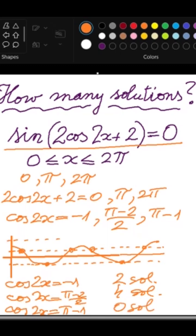This will be a number here which won't intersect our graph. So the answer to this problem will be 6 solutions.